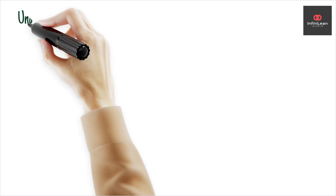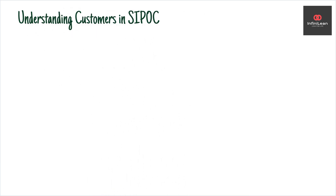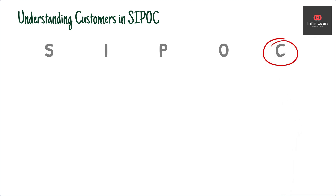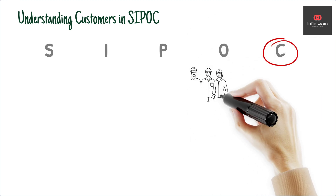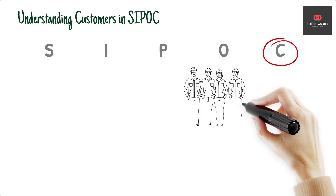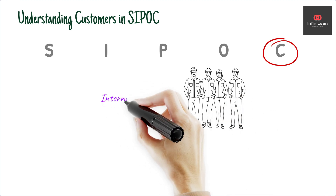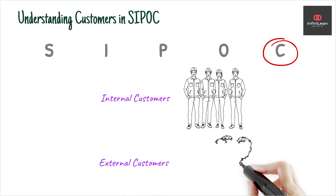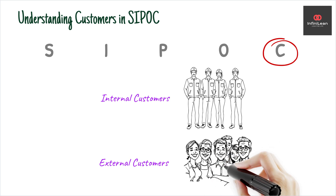Finally, we come to customers. Customers are the recipients of the process outputs. They can be internal or external to the organization. Understanding customer needs helps hone the process to deliver value and ensure customer satisfaction, which is the ultimate aim of Six Sigma.